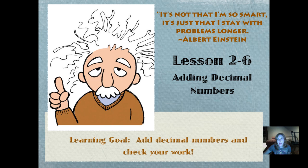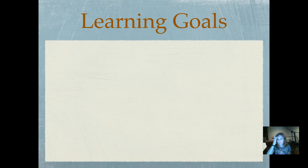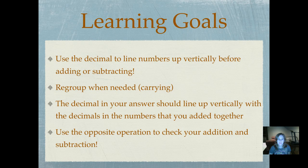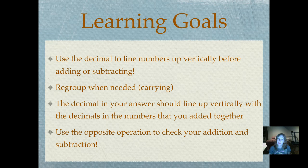Our learning goal today is to add decimal numbers and check your work all the time. Here are individual lesson learning goals. We're going to use the decimal to line numbers up vertically before adding or subtracting. We're going to regroup when needed. That's we're talking about carrying here. The decimal in your answer should line up vertically with the decimals and the numbers that you added together always, and use the opposite operation to check your addition and subtraction.